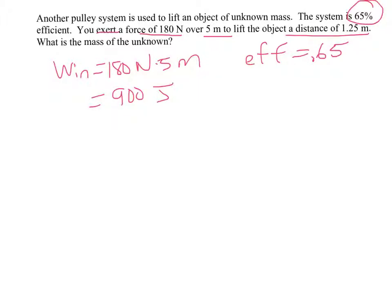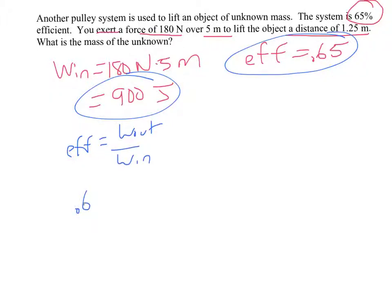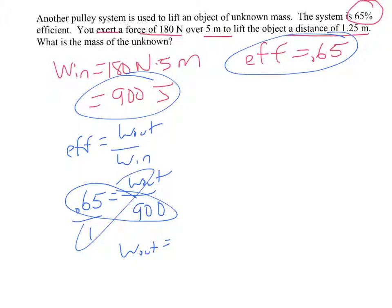Now, if you know the efficiency and you know the work in, then that's enough information to figure out the work out. So before we even look at the rest of the problem, we can actually calculate our work out, because, remember, the efficiency is the work out over the work in. So 0.65 equals the work out over 900. And so if we cross-multiply, work out then times 1 is work out. 900 times 0.65 is 585. So we get 585 joules out.